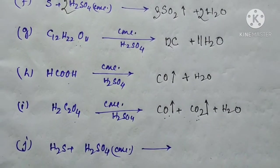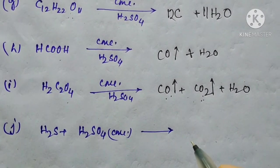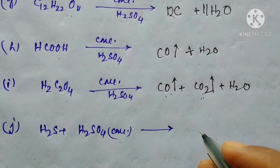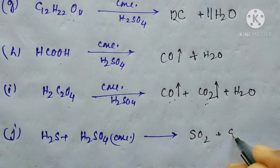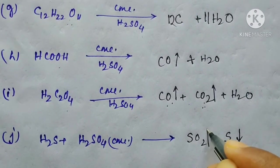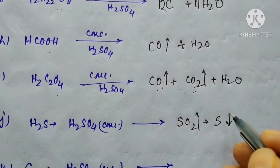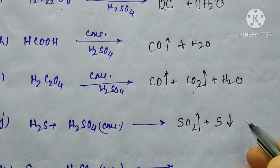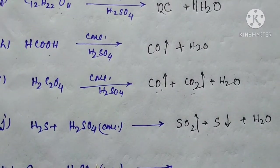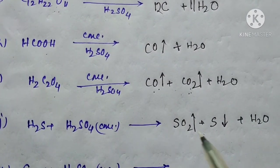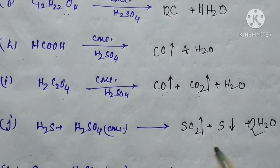The next reaction is H₂S reacting with sulfuric acid. It produces sulfur dioxide as gas, sulfur as a precipitate — shown with a downward arrow — and water. After balancing, we get 2 for water, and it is already balanced.